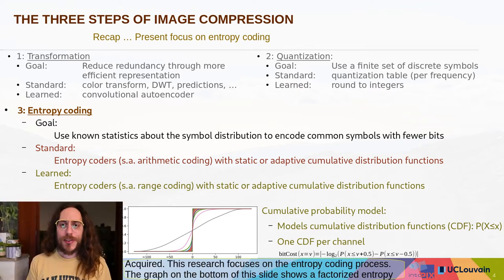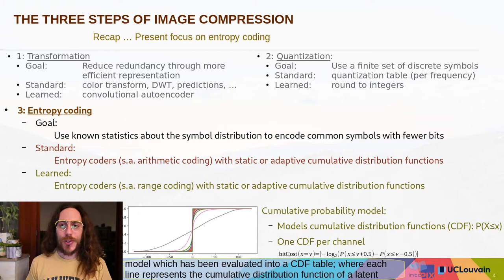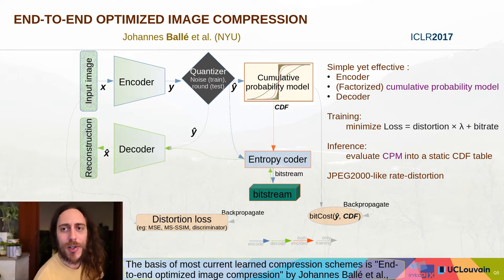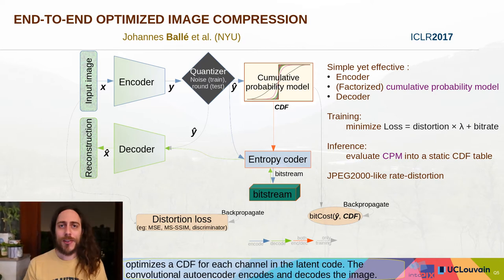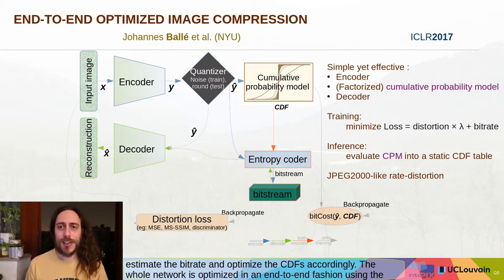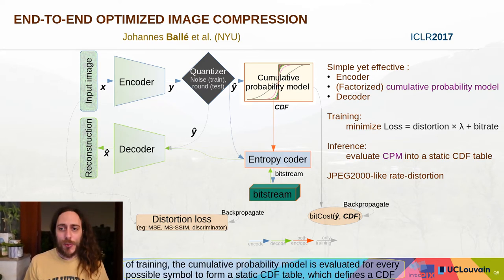The graph on the bottom of this slide shows the factorized entropy model which has been evaluated into a CDF table, where each line represents the cumulative distribution function of a latent channel. The basis of most current learned compression schemes is end-to-end optimized image compression by Ballé and colleagues, illustrated in this slide. The convolutional autoencoder encodes and decodes the image; the latent representation at the bottleneck is quantized and passed to the cumulative probability model, which estimates the bitrate and optimizes the CDFs accordingly. The network is optimized end-to-end, and at the end of training the cumulative probability model is evaluated for every possible symbol to form a static CDF table defining a CDF for every latent channel.